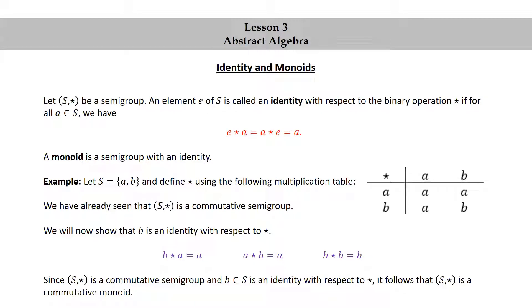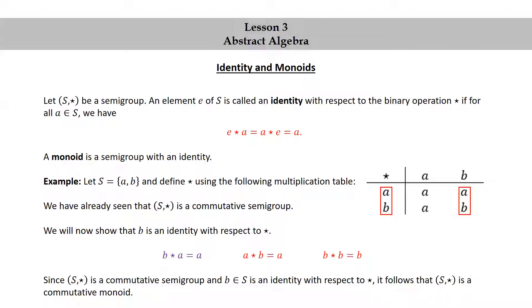Since S★ is a commutative semigroup and B in S is an identity with respect to ★, it follows that S★ is a commutative monoid. Notice that the row corresponding to B is the same as the input row, and the column corresponding to B is the same as the input column. This is a nice visual way to use the table to recognize that an element is an identity.